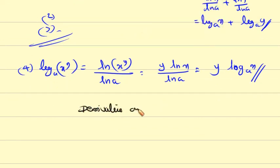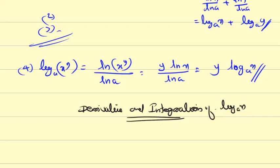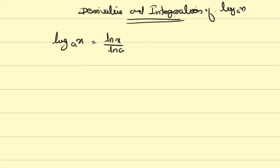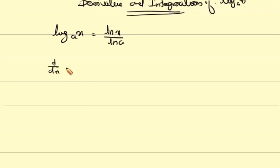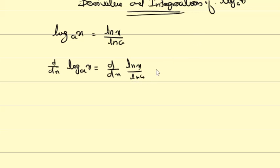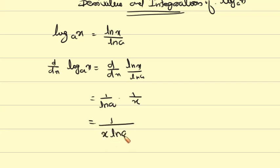Derivative and integration of log x to the base a. We know that log x to the base a equals ln x divided by ln a. Therefore d/dx of log x to the base a equals d/dx of ln x over ln a. Since ln a is constant, it comes outside: 1 over ln a times d/dx of ln x, which equals 1 over x times ln a.